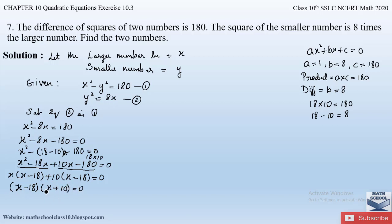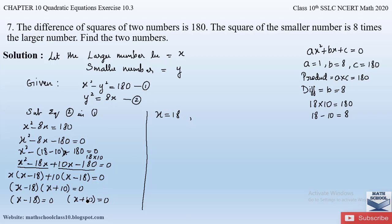Equating each bracket to zero: x − 18 = 0 gives x = 18, and x + 10 = 0 gives x = −10. So we have two values of x. We initially assumed x to be the larger number, so now let us check both cases.